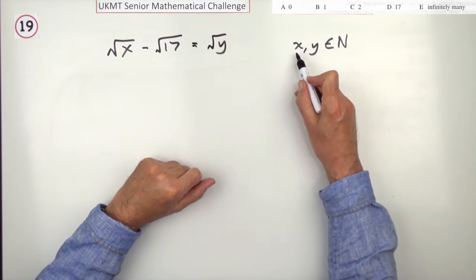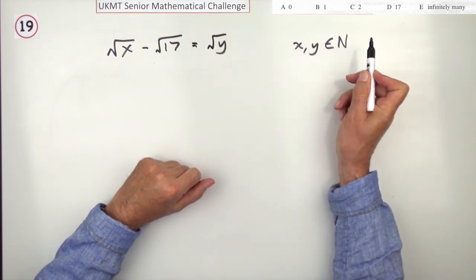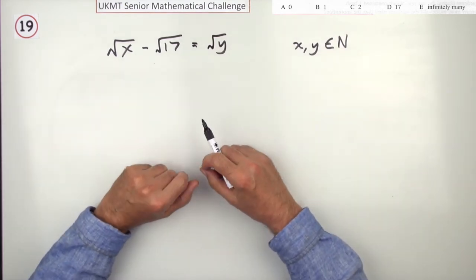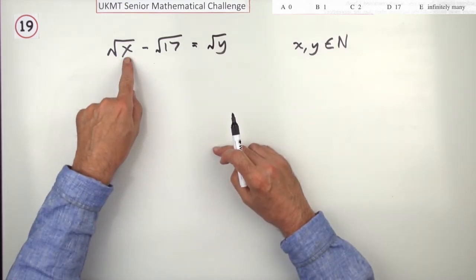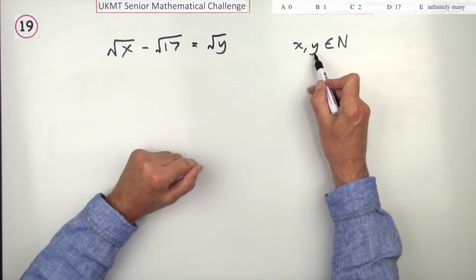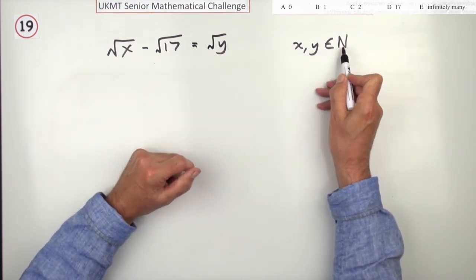It says, how many pairs x, y, which are positive integers, solve this equation? Well, by inspection, you'll just look at it and say, oh, √17 minus √17 would be zero. There's an answer, except it can't be zero, because it's got to be greater than or equal to one.